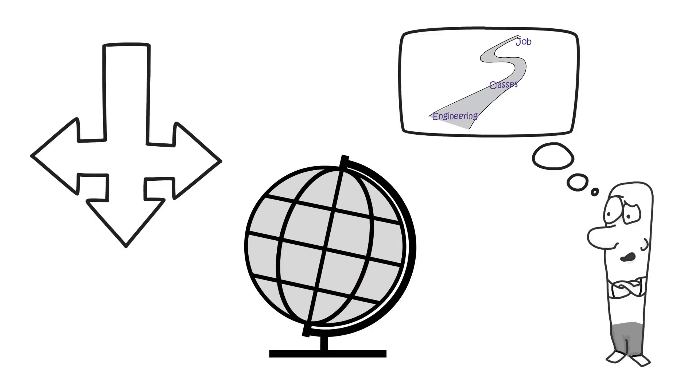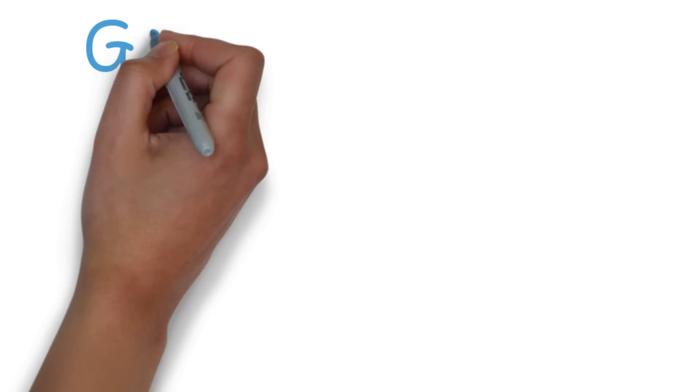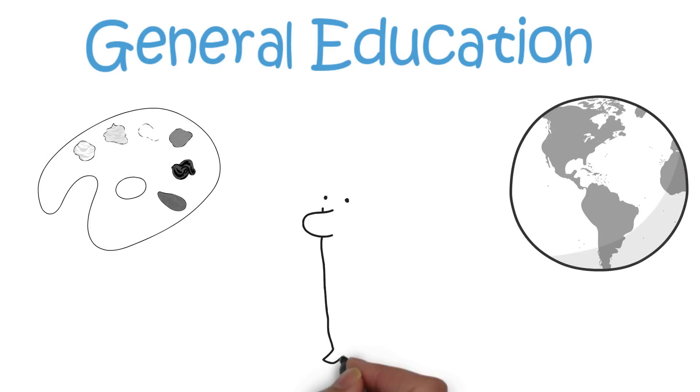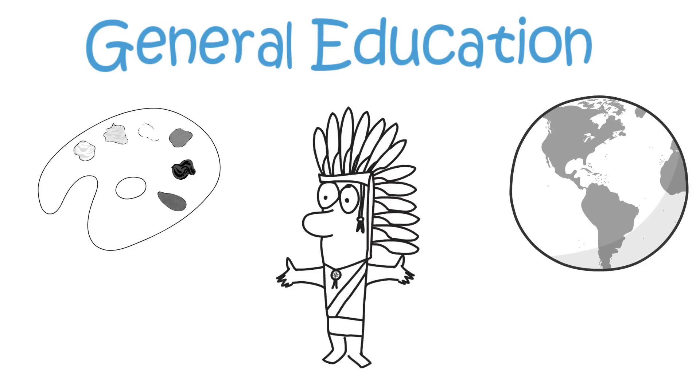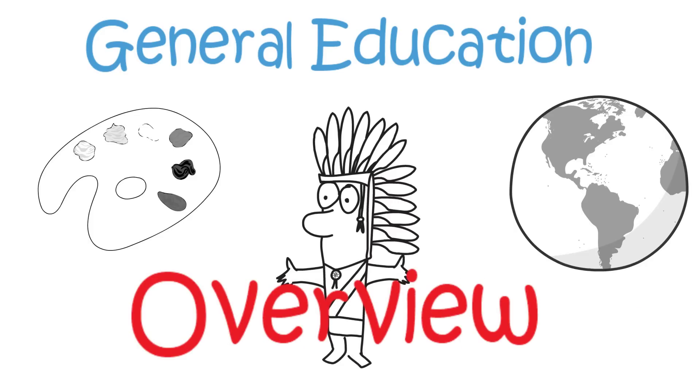When you begin your career you have to take these so-called general education classes or GECs. These classes include subjects like art, culture, and history. These classes are required to give you an overview of different fields. The goal here is to create a well-rounded individual.